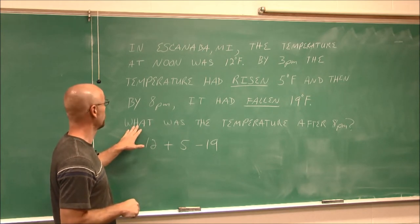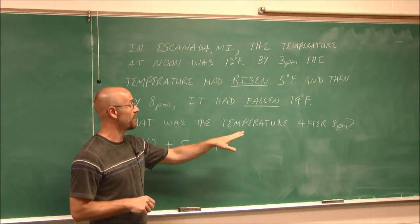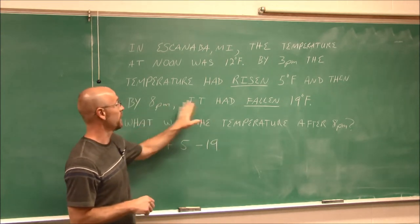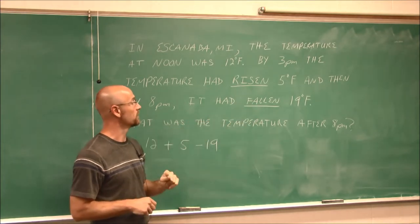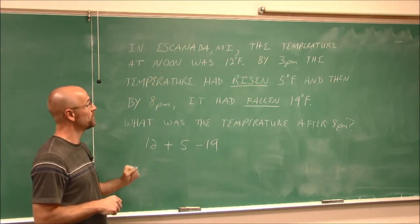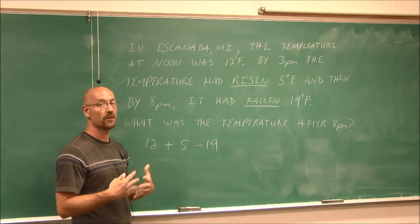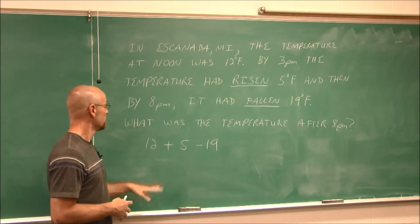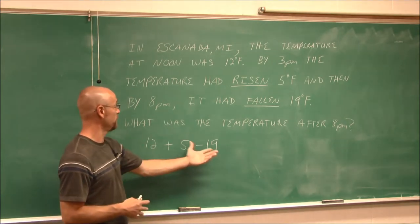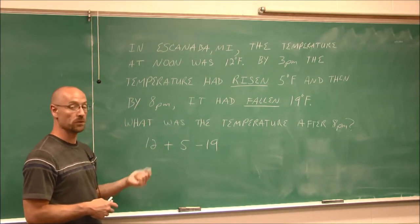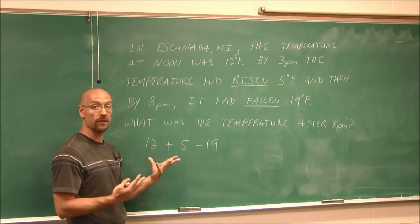And then the last part is, what was the temperature after 8 p.m.? So what we have to do here is read it a third time. What am I supposed to find? I'm supposed to find the final temperature after 8 p.m. So if we look at this, we have some integers, and we have to just do this operation. So I'm just going to work left to right, because that's what order of operations has shown us.